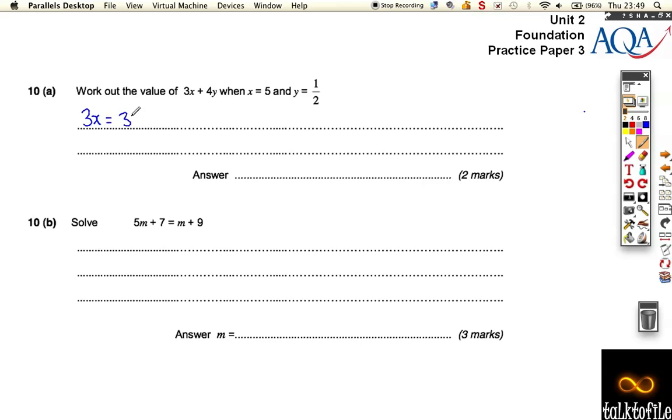Well, 3x means 3 times x, and our value for x is 5, which is 15. And 4y means 4 times by our y value, which is a half, which is 2.